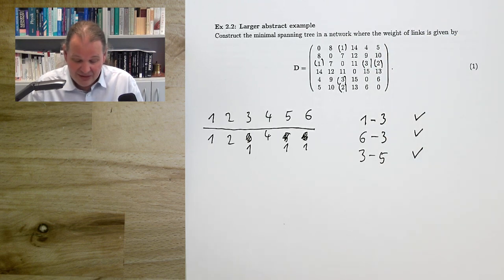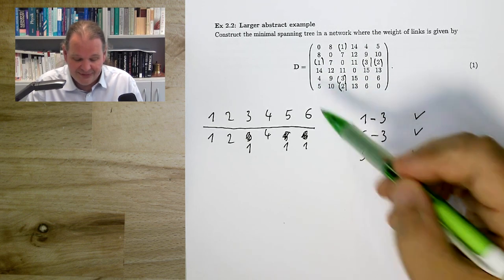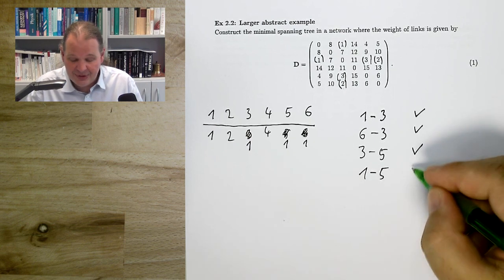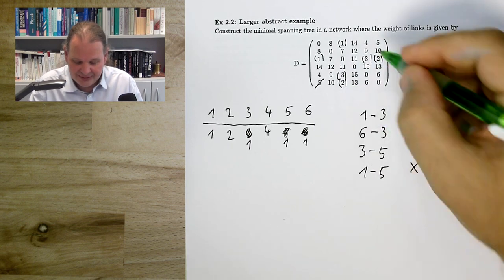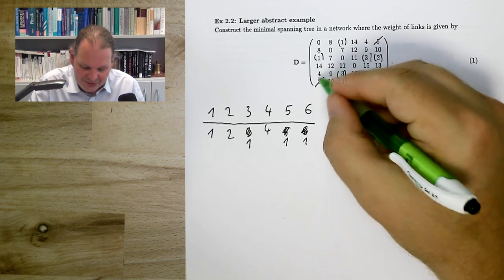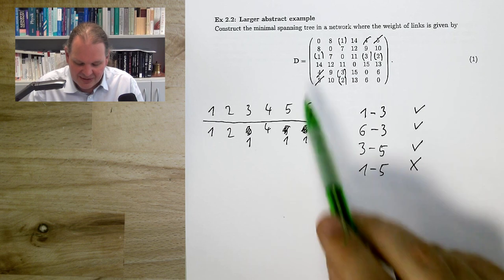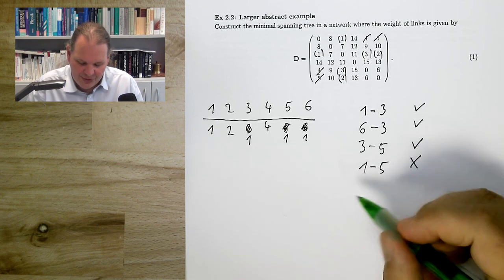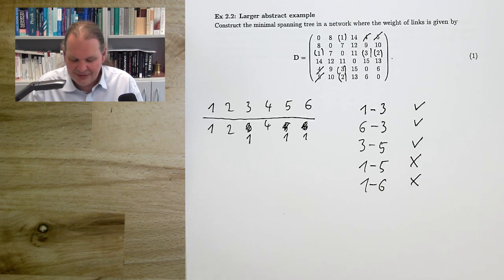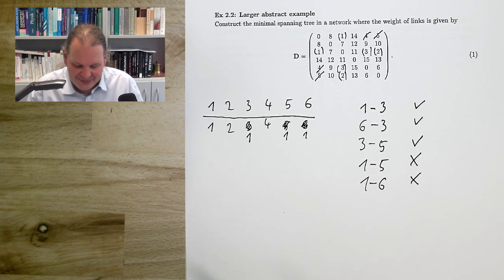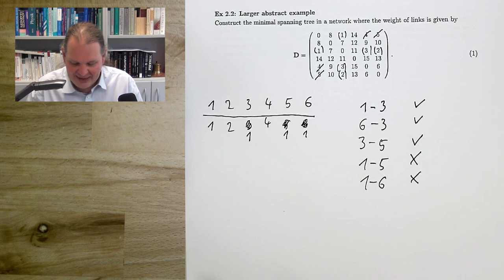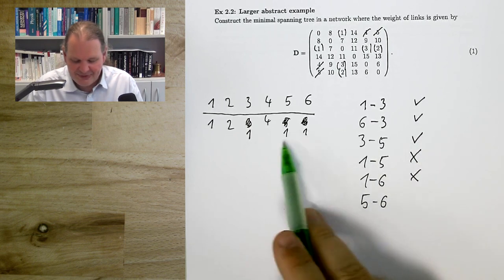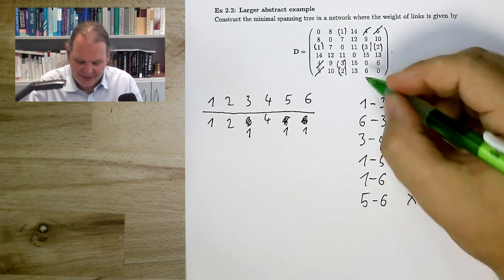The next shortest is 4, from node 1 to node 5. Checking the table: nodes 1 and 5 are already in the same component. Reject. The next is 5, from node 1 to node 6 — also on the same component. Reject. Then 5 to 6 — also the same component. Reject.